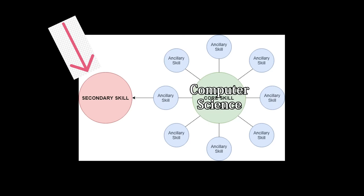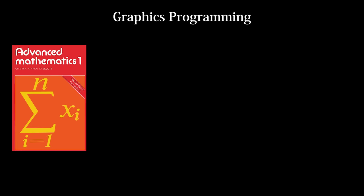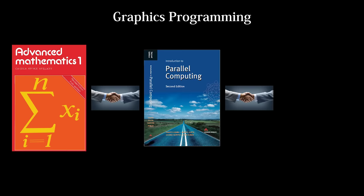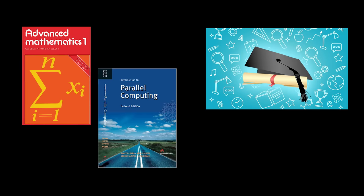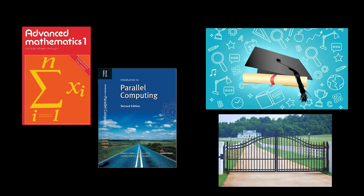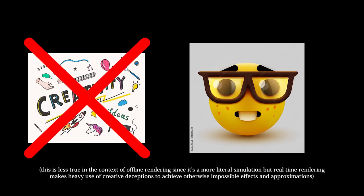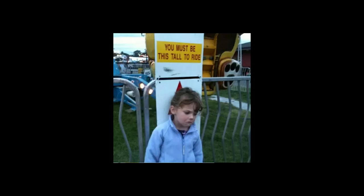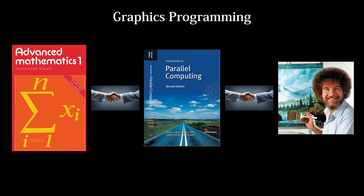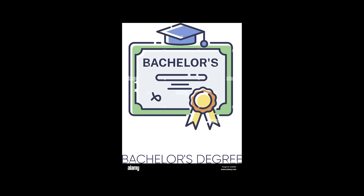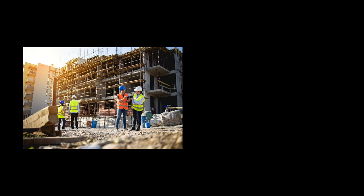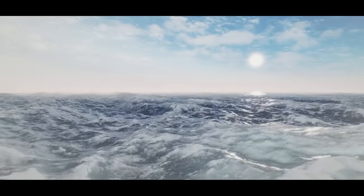Graphics programming is a specialization of computer science in which advanced math meets advanced computer science meets art. This is what makes it so difficult — it requires expertise in two academically gatekept disciplines, as well as a skill that nerds stereotypically don't have. Because of these high requirements, graphics programming is often left for grad school onwards, as an undergrad degree would be spent on building those foundational math and CS skills required for graphics.